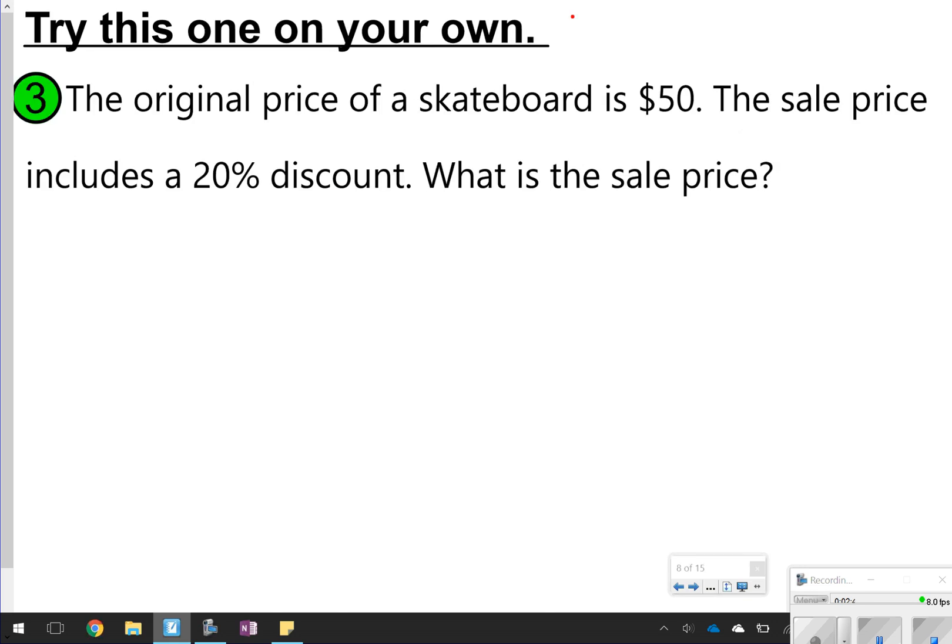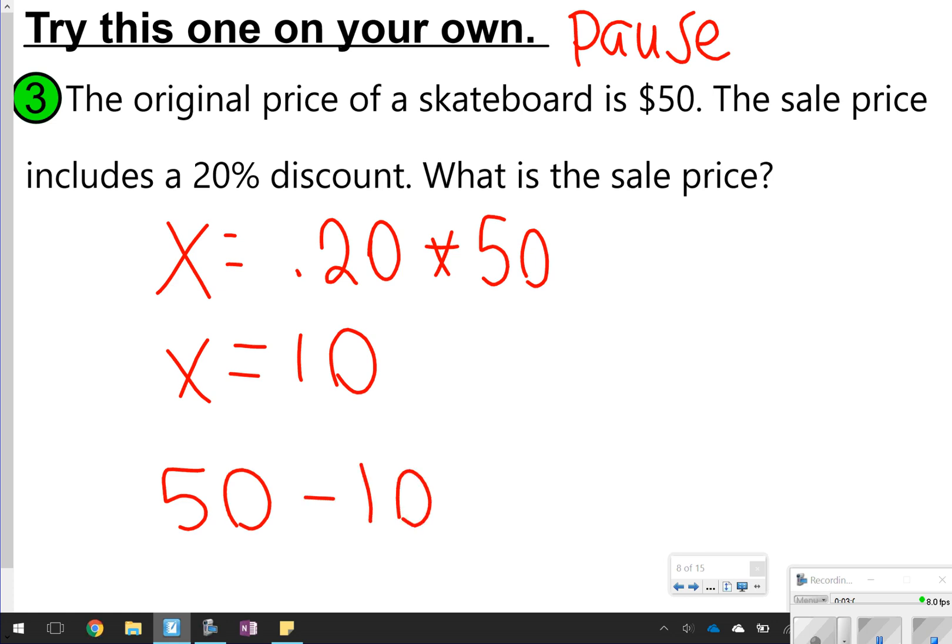The next one you're going to try, so let's go ahead and take time now to pause and try number 3 in your notes. You're solving it the same way. You can either use the percent proportion or the percent equation, whatever you see fit. Okay, for this one, I'm going to do the percent equation. So I'm going to say x is equal to 0.20 times 50. So 50 is my total price, and I'm multiplying by 20%, or 0.20, and I get 10. And then I'm going to take my original price of this skateboard and subtract 10, since it's a discount, and I'm going to get $40.